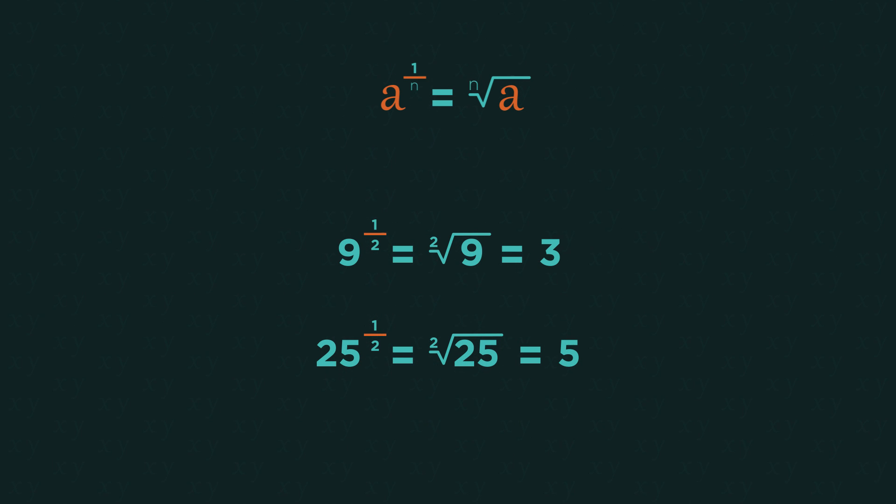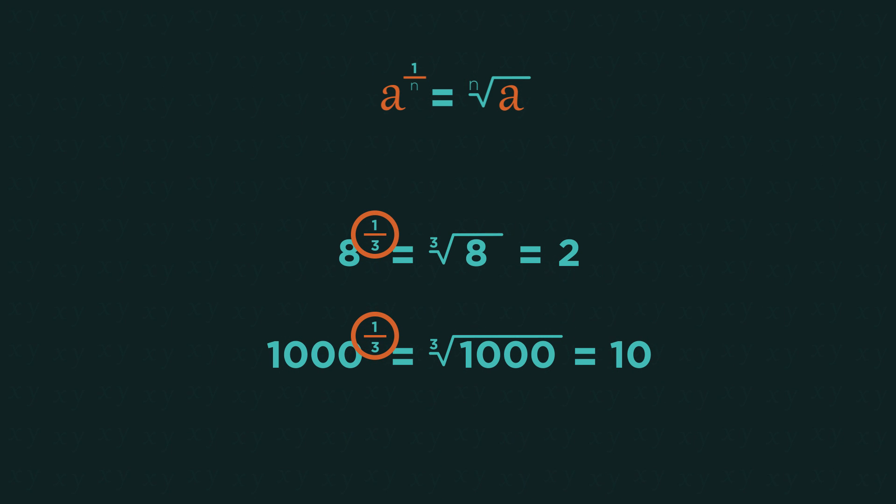So because these are a half, it is square root. A power of a third means the cube root.